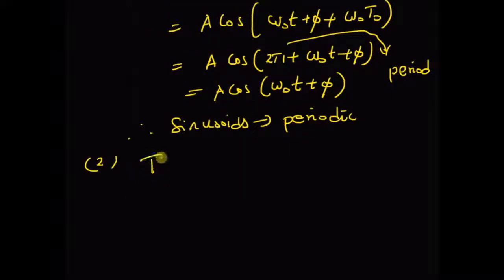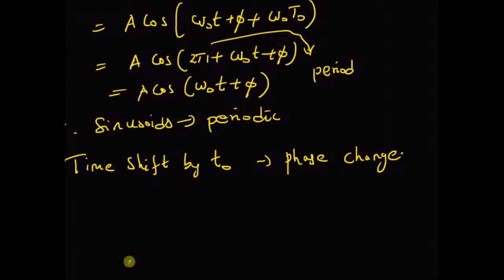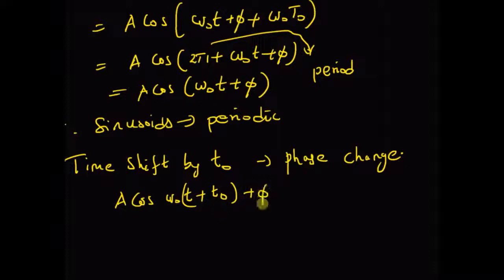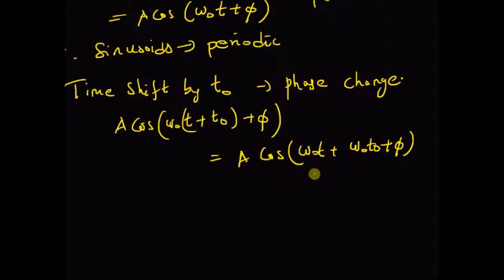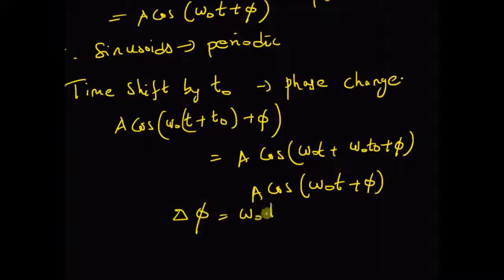The second property is that a time shift by a value t-naught is equivalent to a phase change. The original signal shifted by t-naught is A times cos of (omega-naught·(t + t-naught) + phi), which equals A times cos of (omega-naught t + phi + omega-naught·t-naught). The phase difference between this shifted signal and the original signal A cos(omega-naught t + phi) is delta-phi equals omega-naught times t-naught. That is, a time shift of t-naught is equivalent to a phase shift of omega-naught times t-naught.